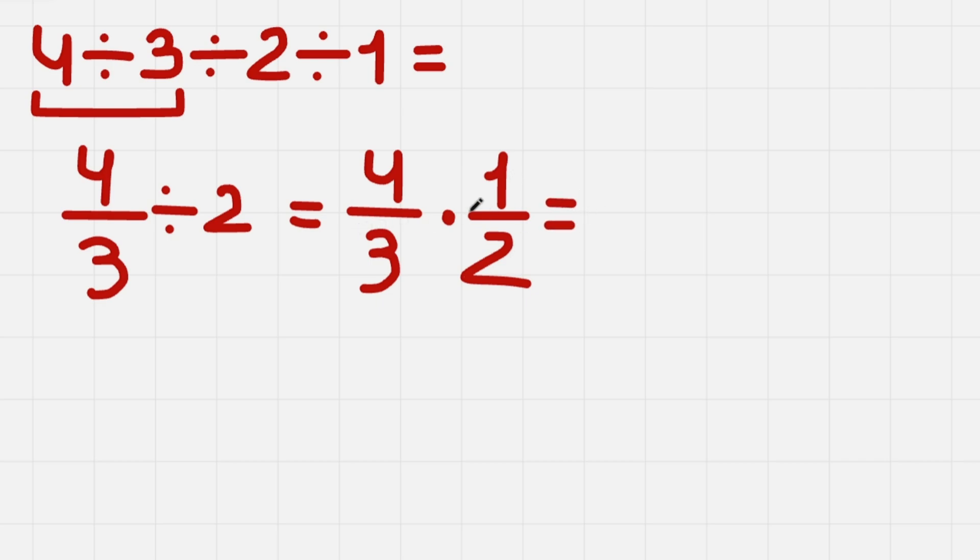And now, to multiply this, we need to multiply the numerators and denominators. So 4 times 1 is 4, and 3 times 2 is 6. And we can also simplify this fraction, because we can divide 4 by 2 to get 2, and we also can divide 6 by 2 to get 3.